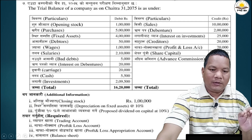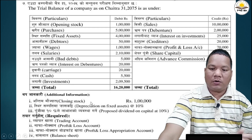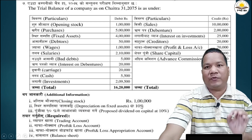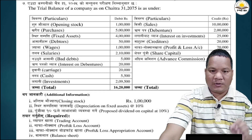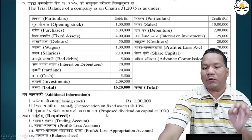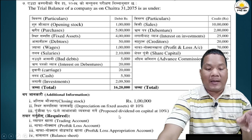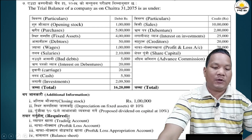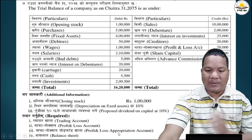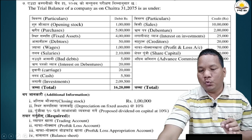Now for the additional information: number one, closing stock is 1 lakh rupees. Number two, depreciation on fixed assets at the rate of 10%. Number three, proposed dividend on capital at 10%. The requirements are: number one, trading account; number two, profit and loss account; number three, profit and loss appropriation account; and number four, balance sheet.